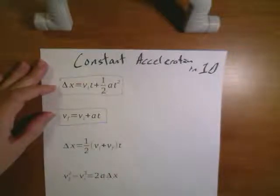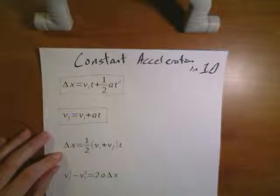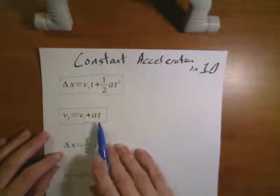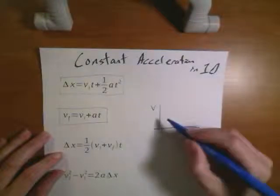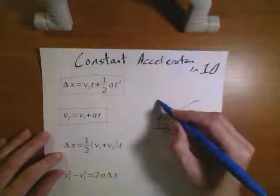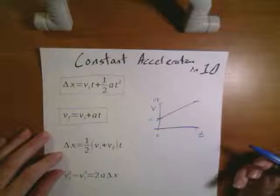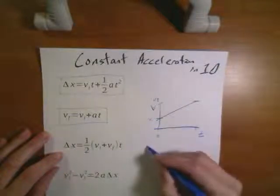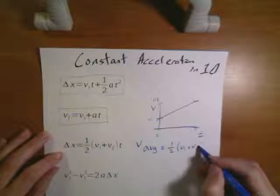There are some other equations that are commonly used as well. This one down here actually comes from the fact that we have an average velocity. Since the velocity is changing, it's going to depend on time, but this equation is a straight line. So if I look at the velocity as a function of time, I'm going to get some sort of straight line with some initial value of the velocity and some final value of the velocity over some particular range of time. From this, we can define the average velocity as being one-half the initial value plus the final value.